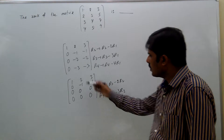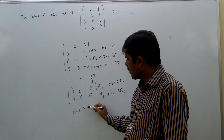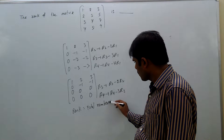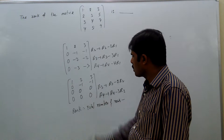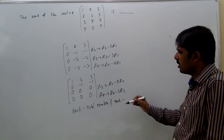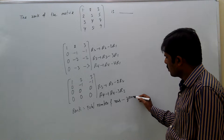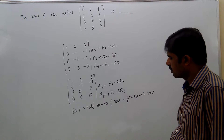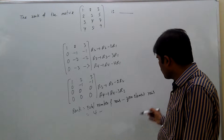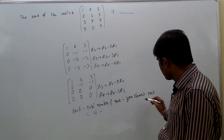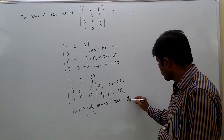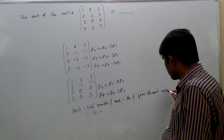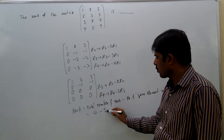Now the rank equals the total number of rows minus the number of zero-element rows. Total number of rows is 4. The number of complete zero-element rows is 2. So rank = 4 minus 2 = 2.